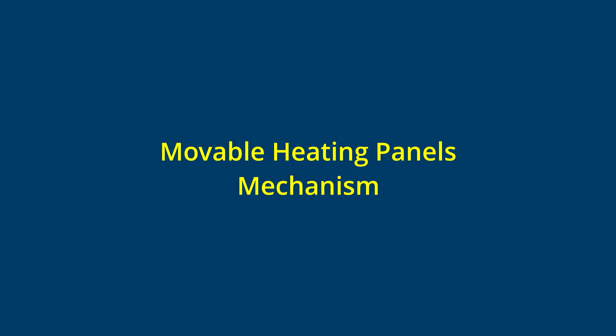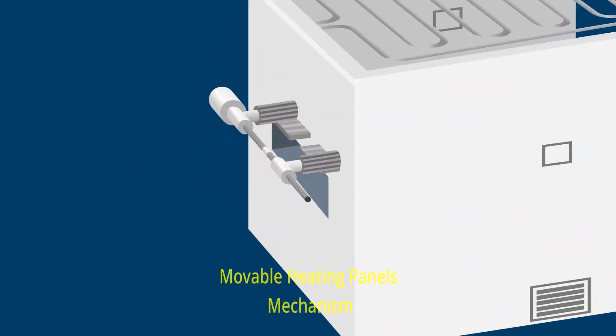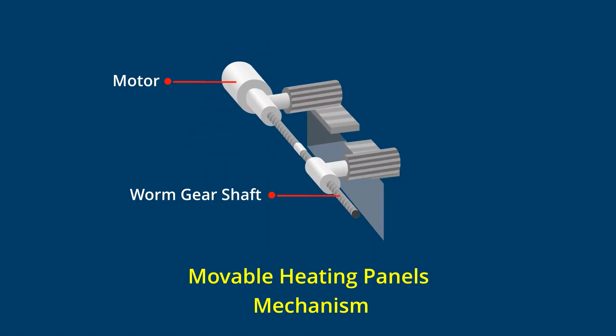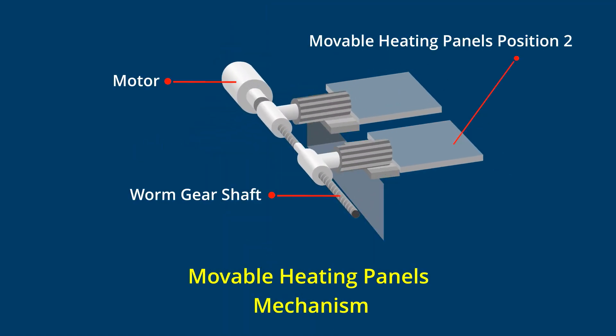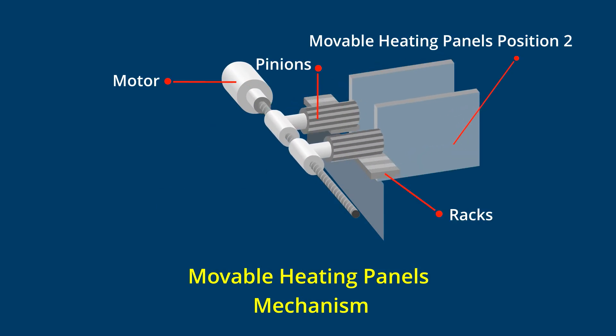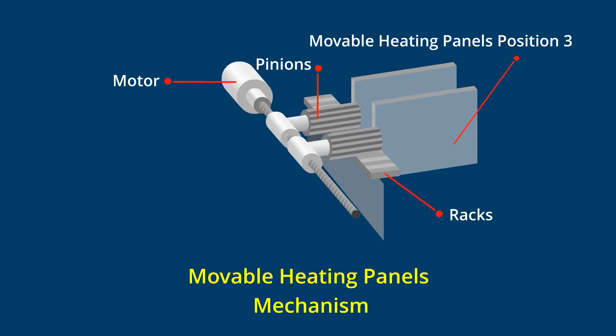The movable heating panels move along a worm gear and, whilst moving, rotate when the gears of the pinion engage with the gears of the rack, thereby achieving their preset positions.